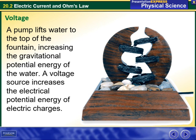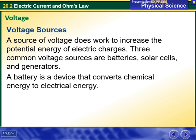A pump lifts water to the top of a fountain, increasing the gravitational potential energy of the water. Similarly, a voltage source increases the electrical potential energy of electric charges. A source of voltage does work to increase the potential energy of electric charges. Three common voltage sources are batteries, solar cells, and generators. A battery is a device that converts chemical energy to electrical energy.